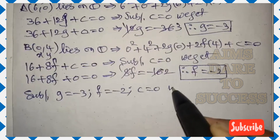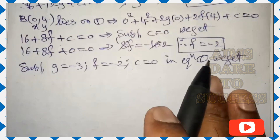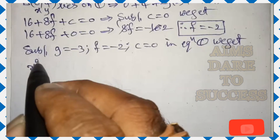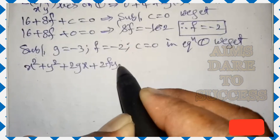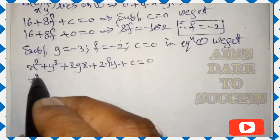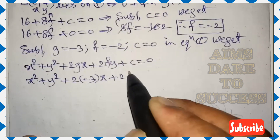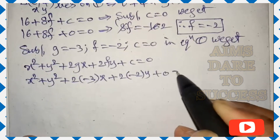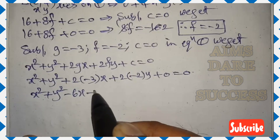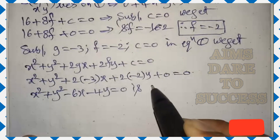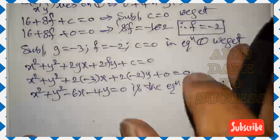We have all three values: g = −3, f = −2, c = 0. Substituting into equation 1 — the standard equation x² + y² + 2gx + 2fy + c = 0 — we get x² + y² + 2(−3)x + 2(−2)y + 0 = 0, which simplifies to x² + y² − 6x − 4y = 0. This is the equation of the circle.